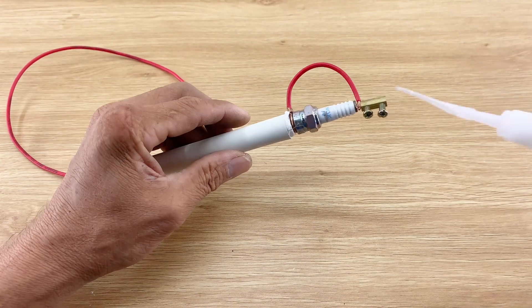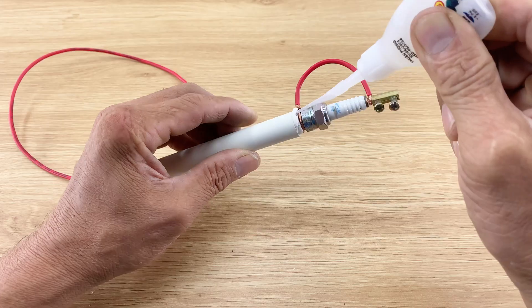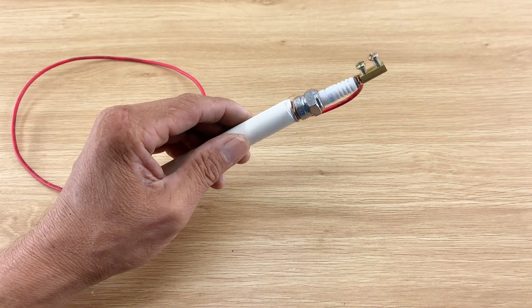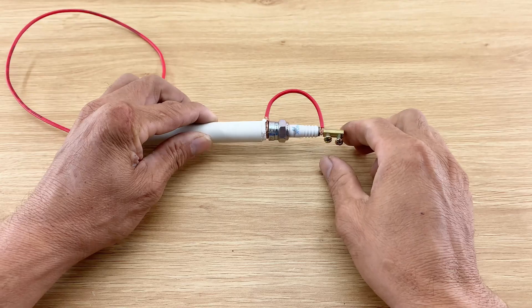Lastly, I apply super glue to the PVC pipe joints to permanently secure all the components of the handle. This guarantees the tool will be robust and safe to handle.